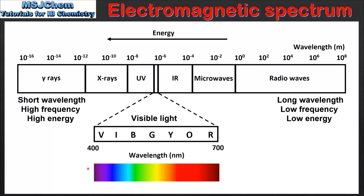Next we will look at the visible region which has all the frequencies or wavelengths of visible light. Starting with red light which has the longest wavelength, the lowest frequency and the lowest energy. And as we go from red to orange to yellow to green to blue to indigo and to violet, the wavelength gets shorter and the frequency and energy both increase. So violet light is the highest energy, the highest frequency and the shortest wavelength.